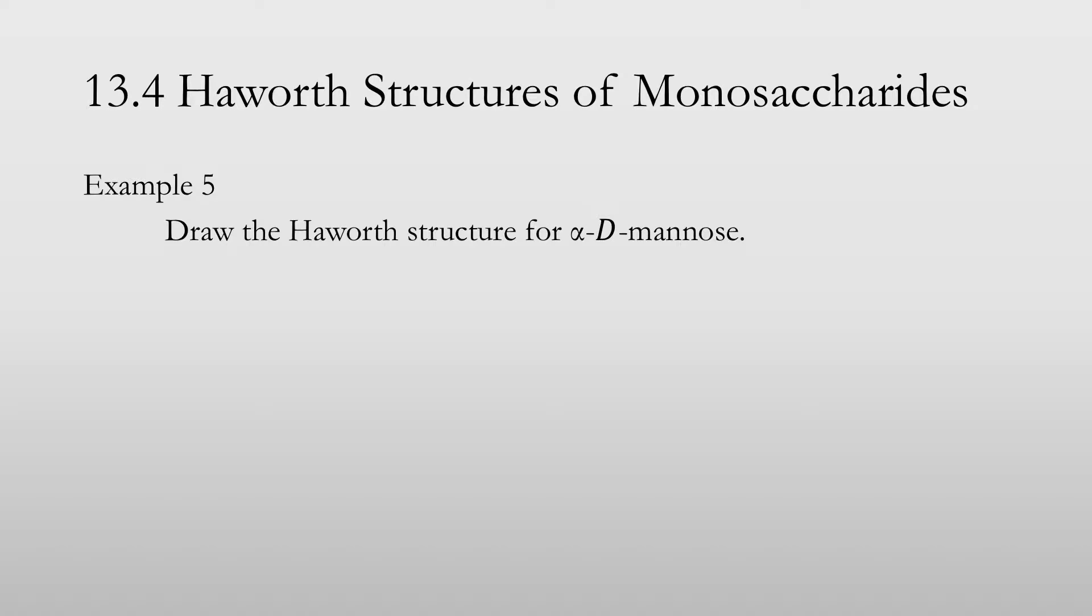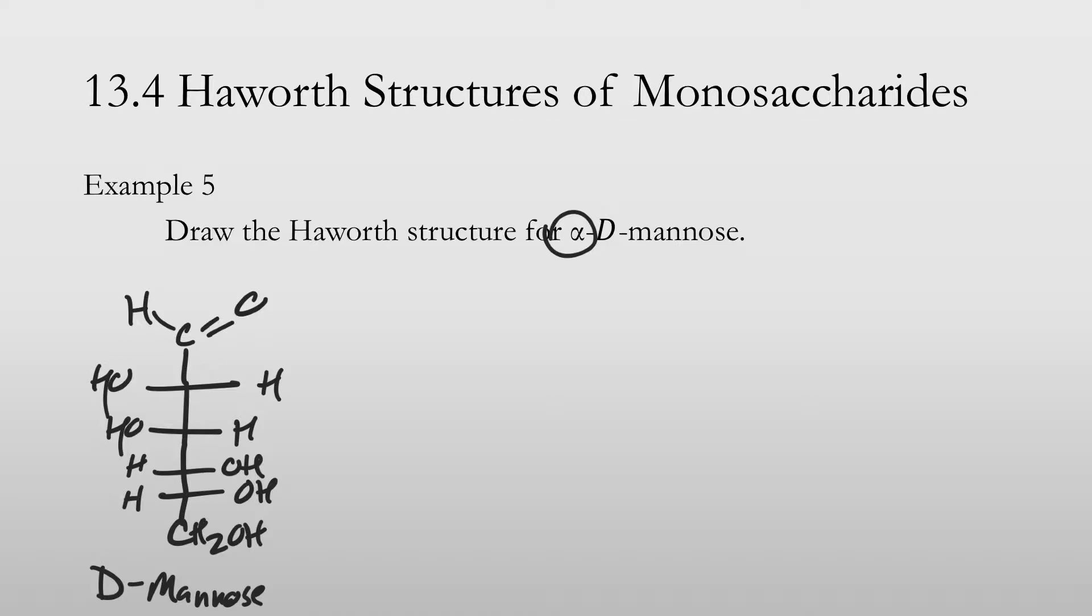Example 5, draw the Haworth structure for alpha-D-mannose. Well, if you look in the book, sample problem 13.5 actually has the D-mannose as this structure right here. You've got OH, OH, H, H, H, OH, OH, H, H. And this is D-mannose. Now what it means for the alpha is that the alcohol from the carbonyl, this right here, is going to end up below the plane.